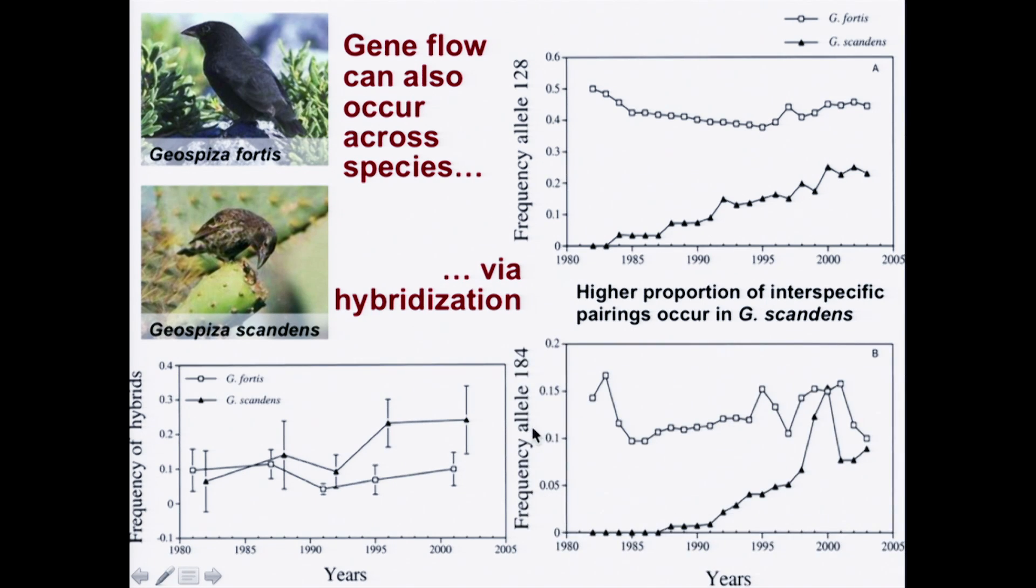And here is another case, allele number 184, again showing an increase in scandens and not as much change in fortis. But gene flow, nevertheless, into one species from another.